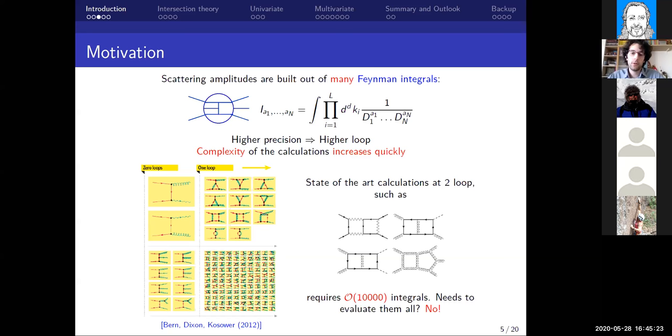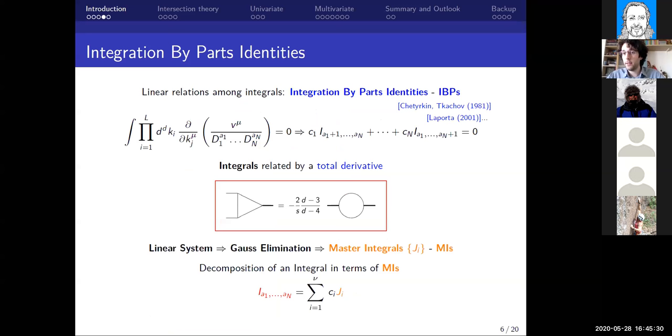Luckily they are not all independent. There are so-called integration by parts identities, IBPs, that connect them. They are relations that are controlled by the vanishing of a total derivative. For instance, here I've put a really simple example where a three-denominator integral is written in terms of a two-denominator one times a coefficient. In this way we can reduce our calculation of multi-loop amplitudes to a smaller set of integrals, master integrals as they are called.